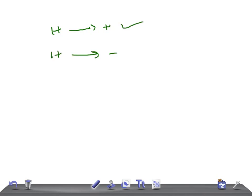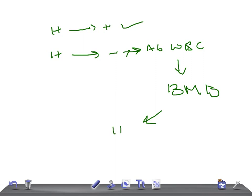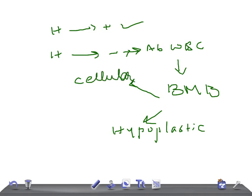Now if hemolysis is absent and there is an abnormal WBC count, then do a bone marrow biopsy. Two things can be found: the marrow can be hypoplastic or cellular. If the bone marrow biopsy shows hypoplastic, then think of aplastic anemia.